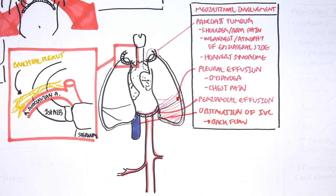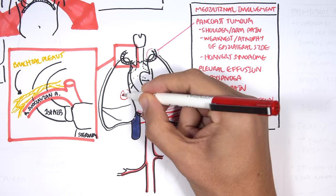Another important structure that can be affected is the superior vena cava, which when blocked can cause the vena cava syndrome. So those were some mediastinal involvements associated with lung cancer growth.